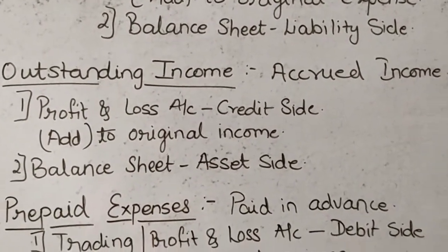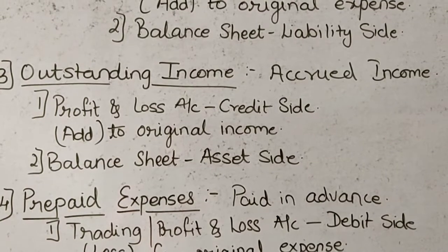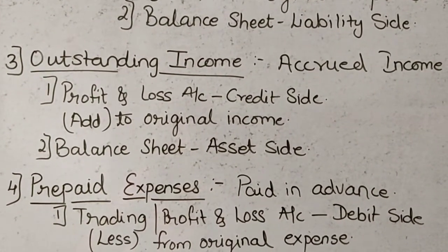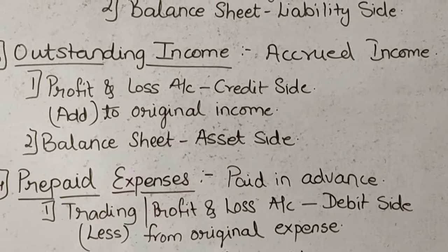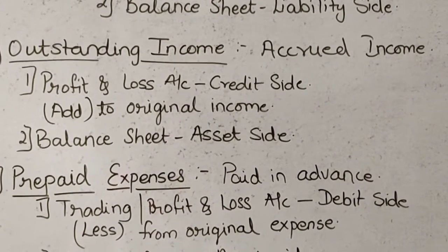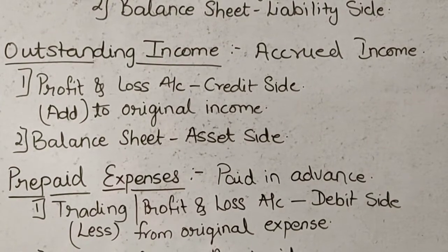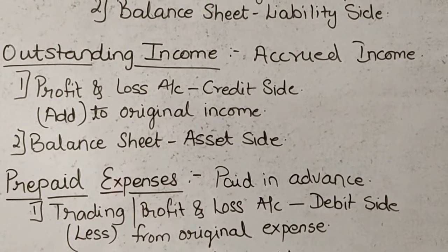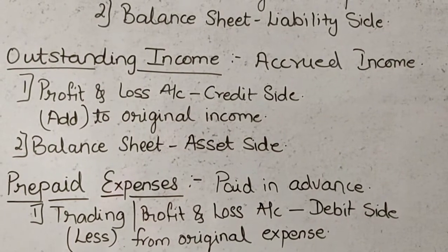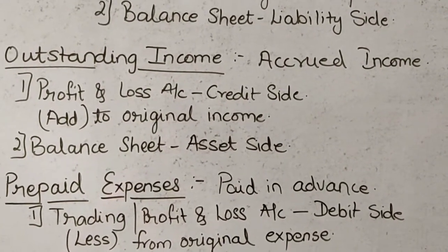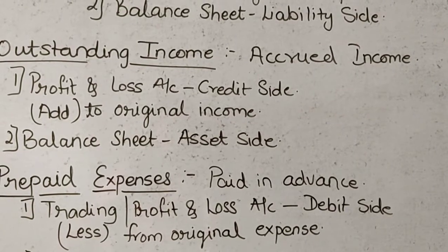The next adjustment is outstanding income. Outstanding income is the income which is due but not received during the year. This income is related to the current year and must be received in the current year, but due to some reasons it is not received. Such type of income is called as outstanding income, and you are likely to receive it in the coming days or future.